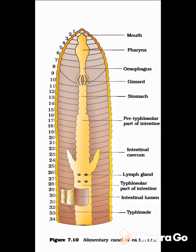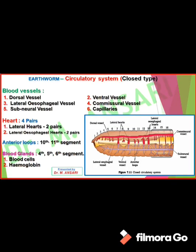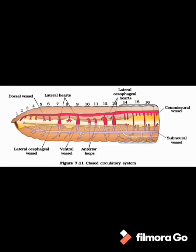The circulatory system in earthworm is of closed type. It consists of blood vessels, heart, two anterior loops, and blood glands. The different blood vessels are: dorsal vessel, ventral vessel, lateral esophageal vessel, commissural vessel, subneural vessels, and capillaries. These vessels supply blood to the gut and other organs and tissues of the body.